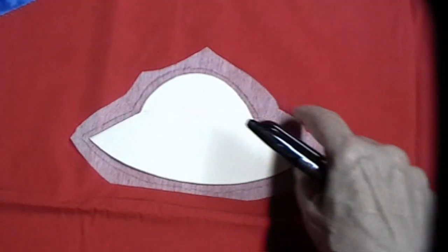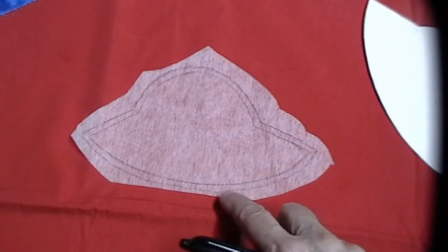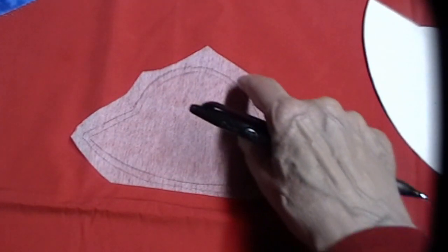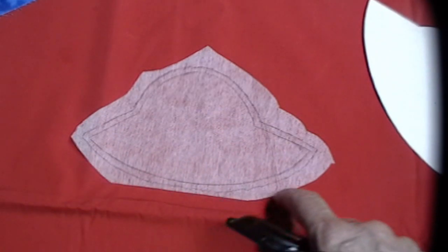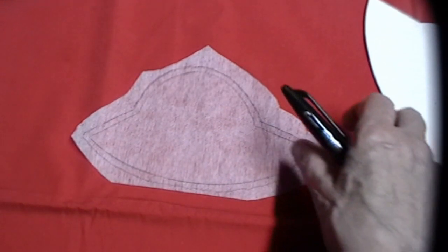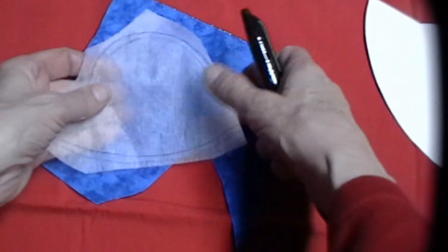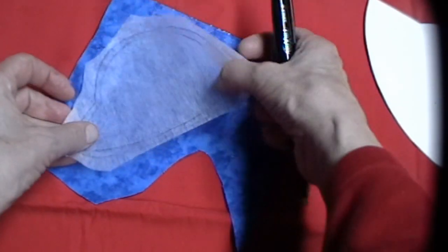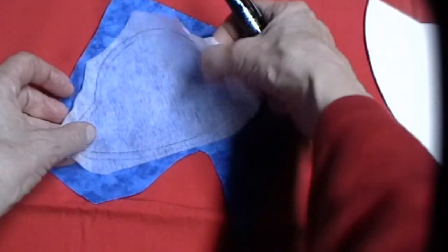Trace your pattern on the interfacing. Then draw a line one quarter of an inch outside of the pattern piece you've drawn. Take your interfacing and pin it onto the fabric of your choice. This is going to be my hat.